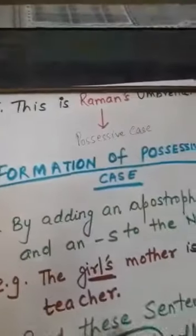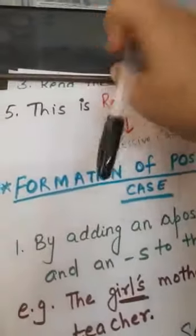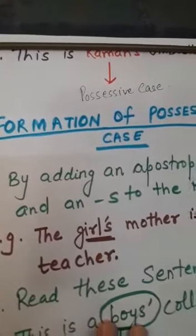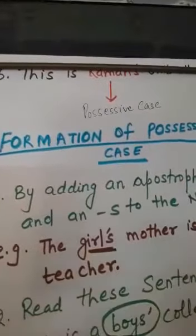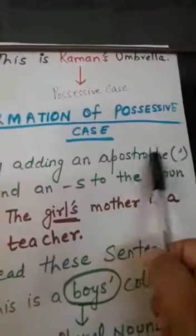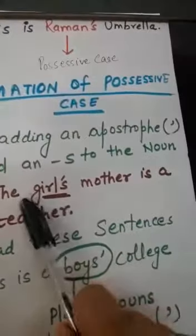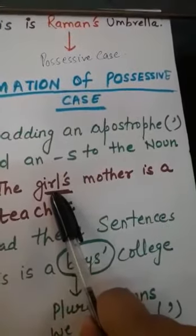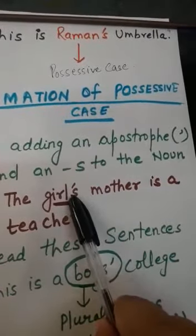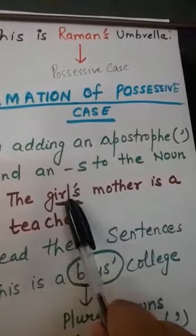Now the next topic is formation of possessive case. The first rule: add an apostrophe and then s to the noun. For example: the girl's mother is a teacher. Here 'girl' is a noun; we add apostrophe followed by s to make it the possessive form. 'Whose mother?' — girl's mother is a teacher.